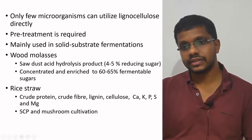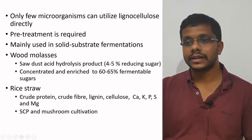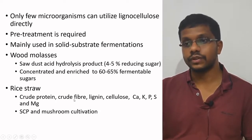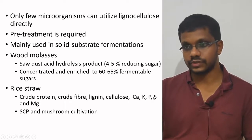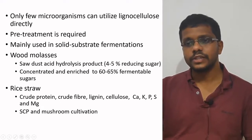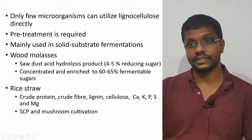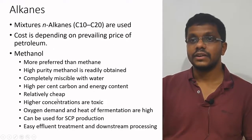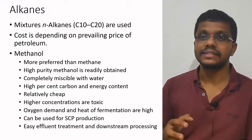Another source of cellulose is rice straw. Rice straw contains crude proteins, crude fibers, lignin, cellulose, and minerals such as calcium, potassium, phosphorus, sulfur, and magnesium. It is used for solid substrate fermentation, single cell protein production, and mushroom cultivation. Another carbon source category is alkanes.